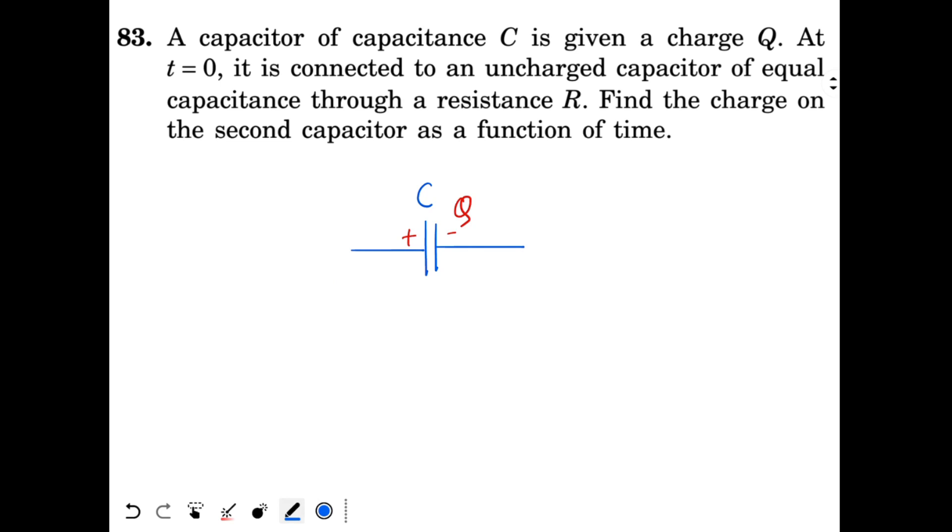It is connected to an uncharged capacitor at t equal to 0. So I put an uncharged capacitor of same capacitance. The other capacitor has same capacitance. So this is a resistor R and this is the switch. At t equal to 0, I close the switch and then what will happen?